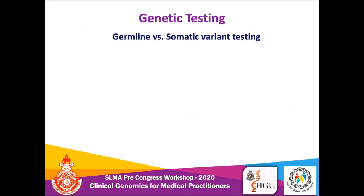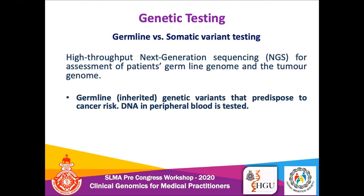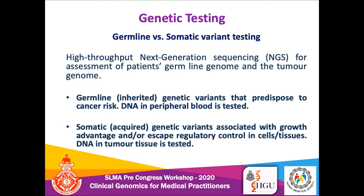There are two main genetic testing methods: germline and somatic variant testing. Nowadays, high-throughput next-generation sequencing enables us to look at the patient's germline genome from blood, or the tumor genome from tumor tissue. Germline inherited genetic variants are those that predispose an individual to increased cancer risk — we look for variants in cancer predisposing genes in peripheral blood DNA. For somatic or acquired genetic variants associated with uncontrolled replication, tumor growth advantage, and so on, we test DNA from tumor tissue to identify what somatic variants are driving the tumor.